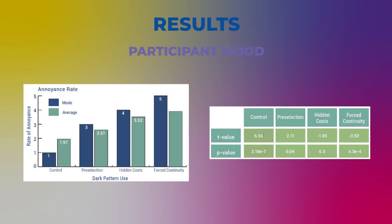Participant Mood: It was hypothesized that participant mood would affect reuse rate. Participants reported feeling somewhat annoyed and aggravated when seeing forced continuity, and somewhat happy and relaxed when seeing the control. A two-way ANOVA found statistical significance between reuse rate and participant mood, confirming the hypothesis. A paired two-tailed T-test found that participant mood affected reuse rate in the control group and for forced continuity — positive moods increase reuse and negative moods decrease reuse.